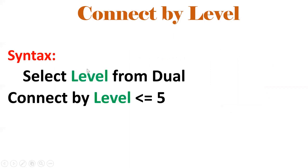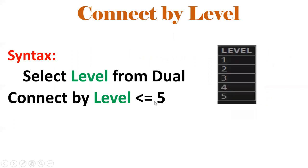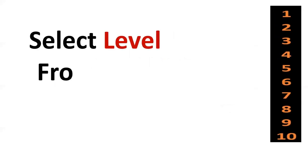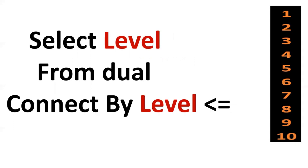Next, the CONNECT BY LEVEL concept. In SQL, if you want to loop, you use CONNECT BY LEVEL. The syntax is: SELECT LEVEL FROM DUAL CONNECT BY LEVEL <= 5, which will loop 5 times, giving 1, 2, 3, 4, 5. If I want to print 1 to 10 numbers, I use CONNECT BY LEVEL <= 10. They may ask you to print multiples of 3 and so on — CONNECT BY LEVEL handles this. It will iterate for 10 times.